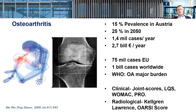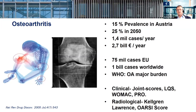As you all know, osteoarthritis is a real pandemic. It has a prevalence of about 15% in Austria and is expected to raise up to a quarter of the whole society. It has a lot of costs associated with it, and the WHO has considered this one of the major burdens of mankind.